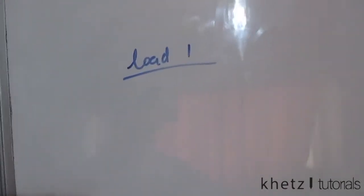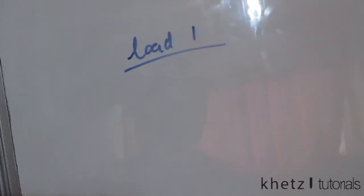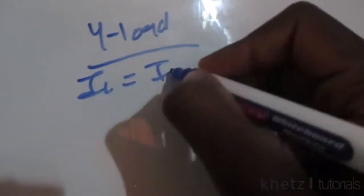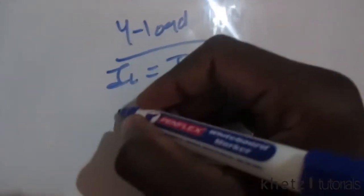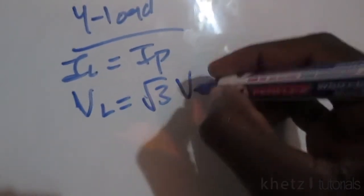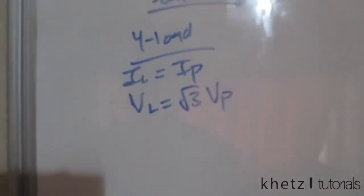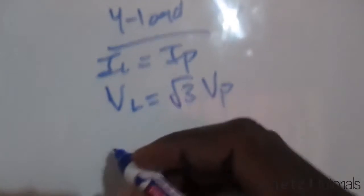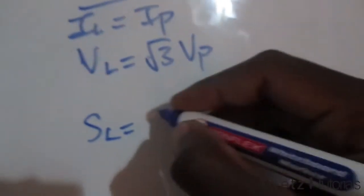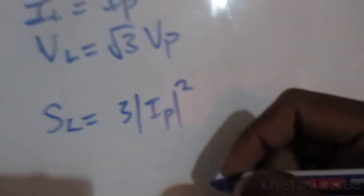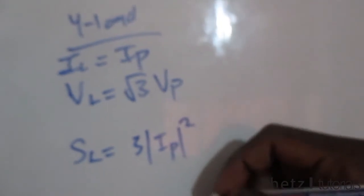Starting with load one, which is Y-connected: for a Y load, the line current equals the phase current, and the line voltage equals square root of three times the phase voltage. The complex power for a load is three multiplied by the magnitude of the phase current squared, multiplied by the impedance per phase.